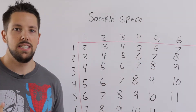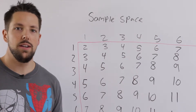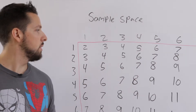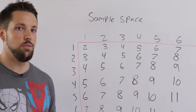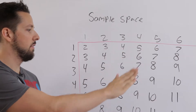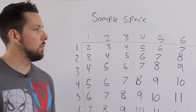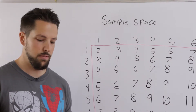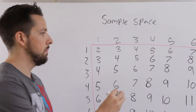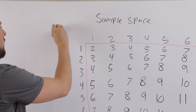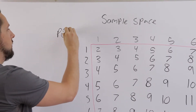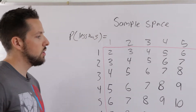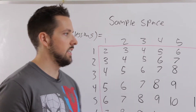Let's do an example. Say we're rolling two dice and I want to find out what's the probability of getting a sum less than five. We draw out the sample space of rolling two dice — the list of every possible outcome. Probability is the number of desired outcomes over the total number of outcomes. The total number of outcomes in this case is 36.